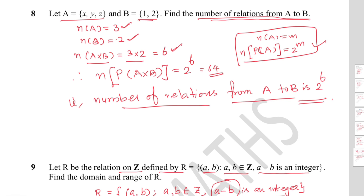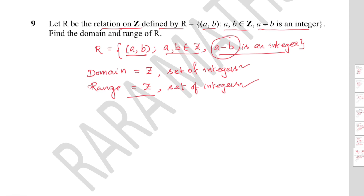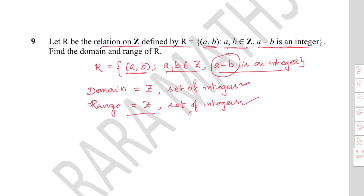Question 9: Let R be the relation on Z (integers) defined by R = {(a, b) : a, b ∈ Z and a - b is an integer}. Since a and b are both integers, a - b is always an integer. Therefore the domain of R is the set of all integers Z, and the range of R is also the set of all integers Z. That completes the exercise.